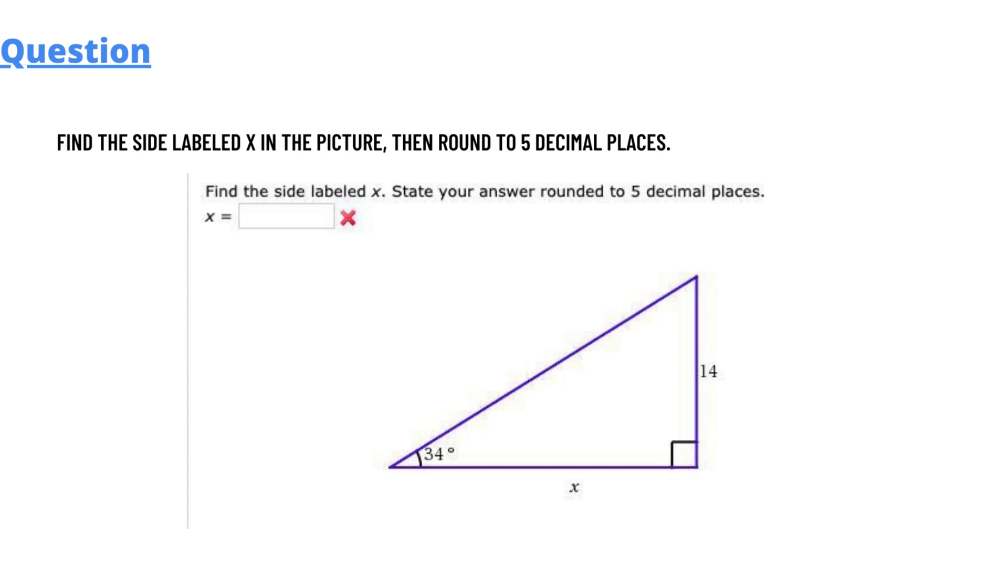We have to find the side labeled x. We have three sides in the triangle. We're given an angle of 34 degrees and one side measuring 14. We have two unknowns, x and y. The value 14 is the side between the 34 degree angle, and we need to find x.